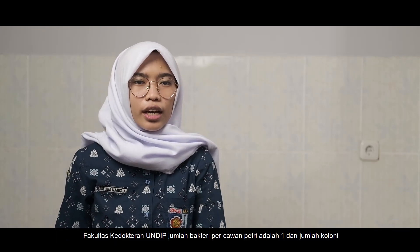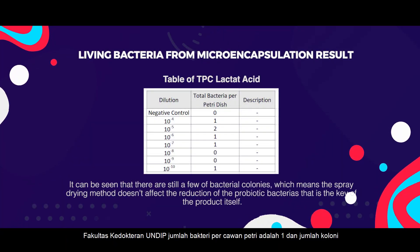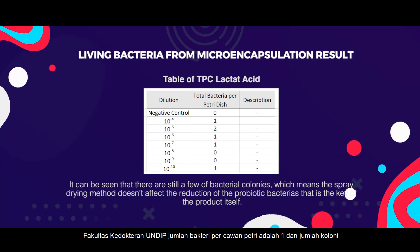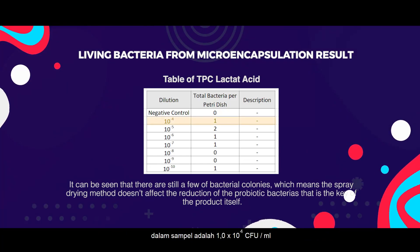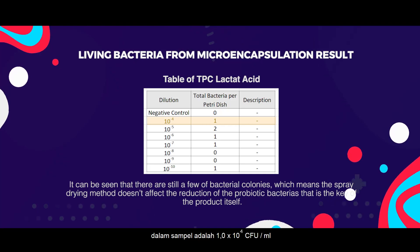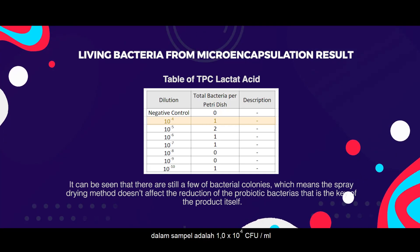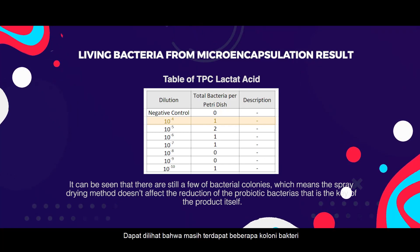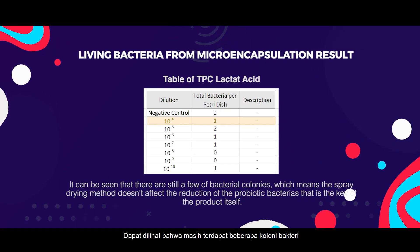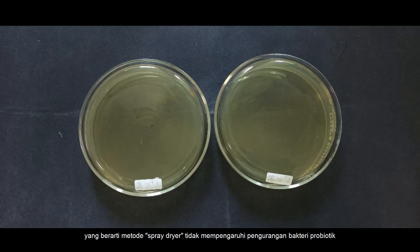With a dilution of 10 to the power of minus 4 and the provisions of standard plate counts, data obtained from laboratory testing at the Faculty of Medicine UNDIP show the number of bacteria per petri dish is one, and the number of colonies in the sample is 1.0 times 10 to the power of 4 CFU per milliliter. This indicates there are still a few bacterial colonies, meaning the spray drying method does not significantly affect the reduction of probiotic bacteria.